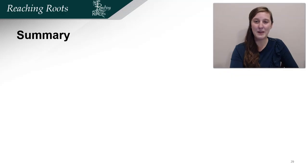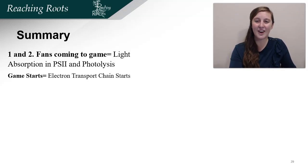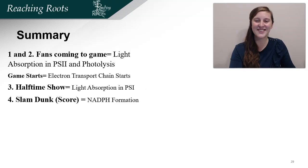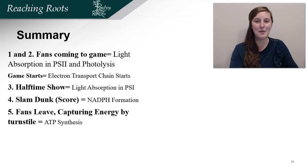I hope this analogy helped. Let me summarize it. In steps one and two, fans are coming to the game — just like light absorption in photosystem 2 and photolysis occur — and that gets the hydrogen into the interior of the thylakoid or the stadium. Then the game starts, which is the electron transport chain. Then there's a halftime show, which is more light absorption specifically into photosystem 1. Then we have a slam dunk, or a score, which is NADPH formation. And then the fans leave, and in the process we capture that energy to charge a battery — which is ATP synthase. All these processes in photosynthesis are happening all at once.